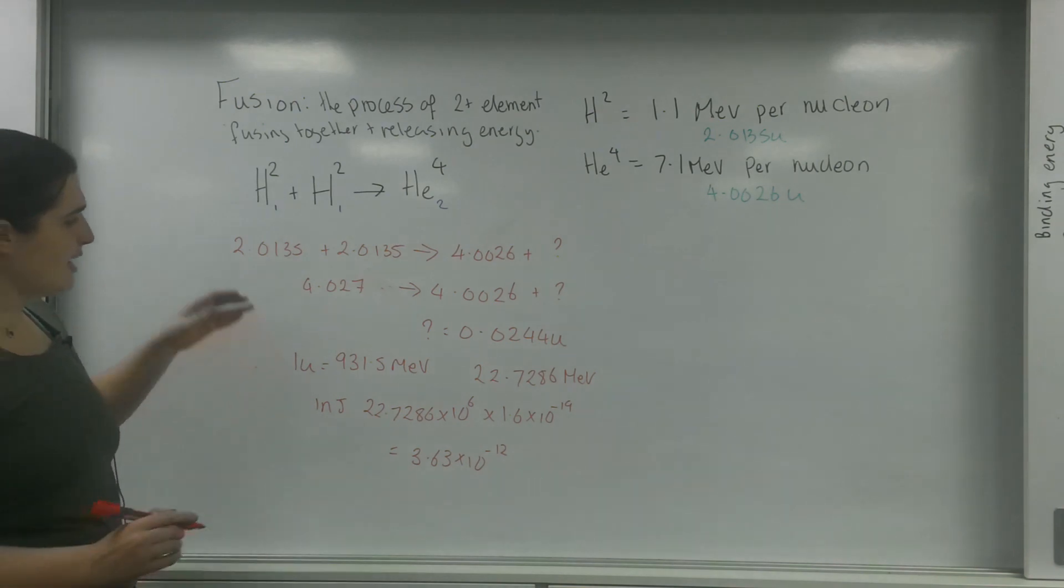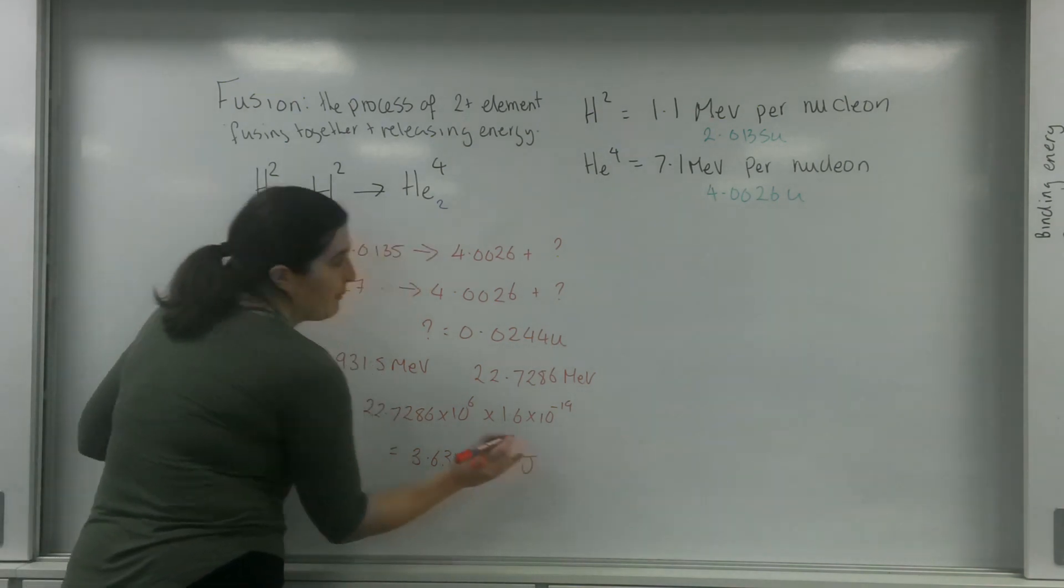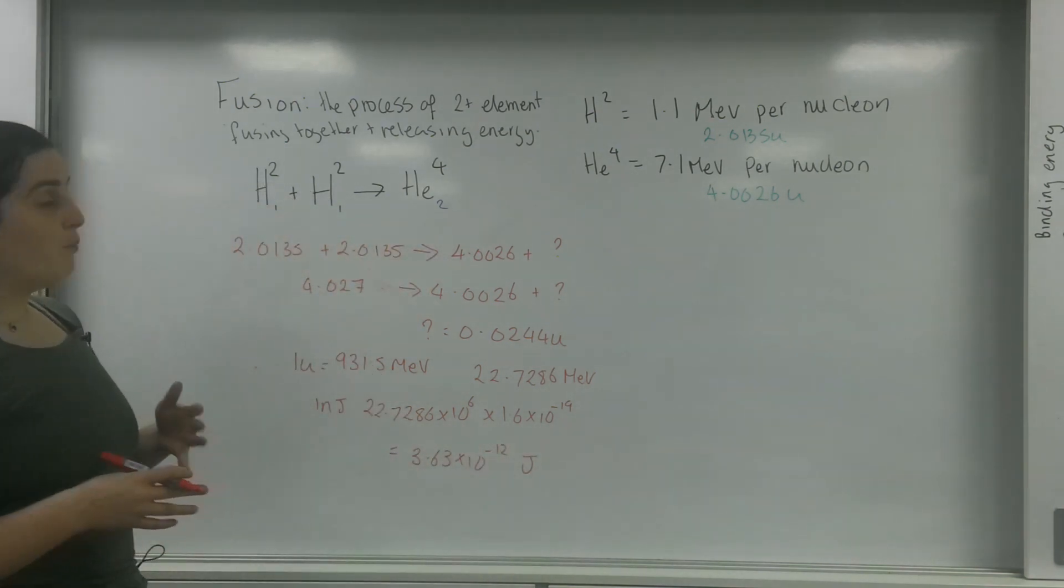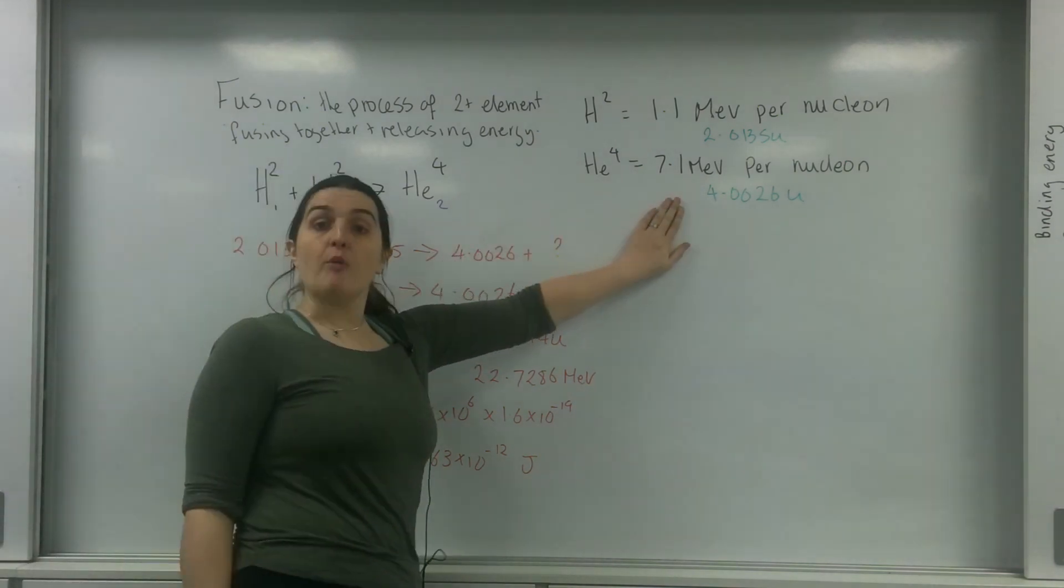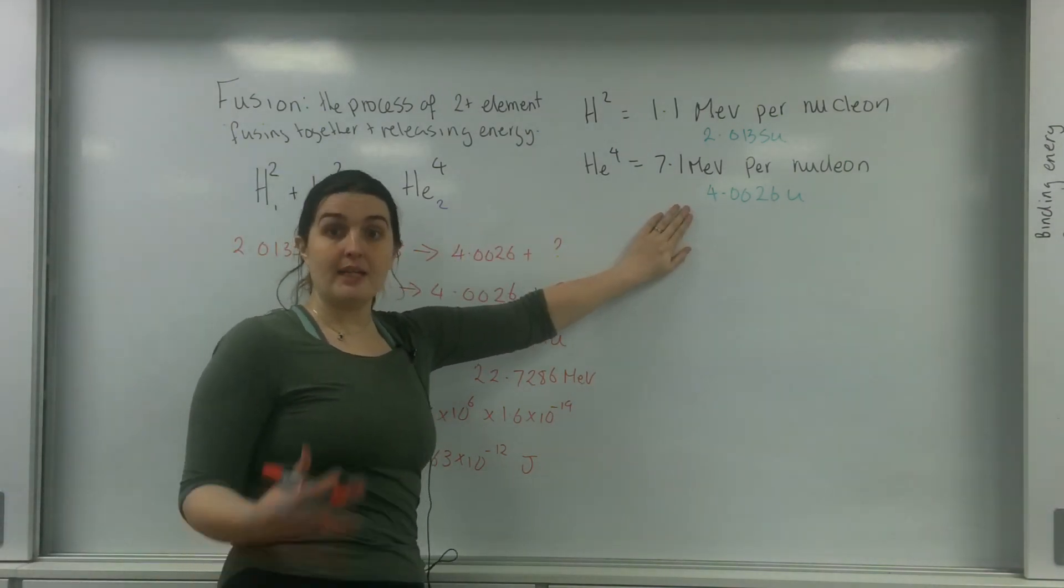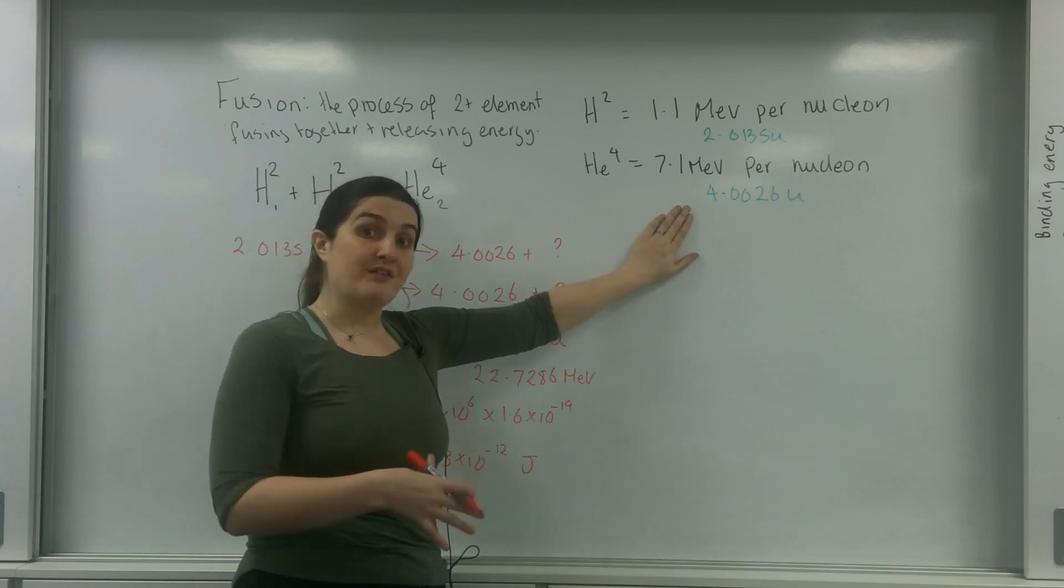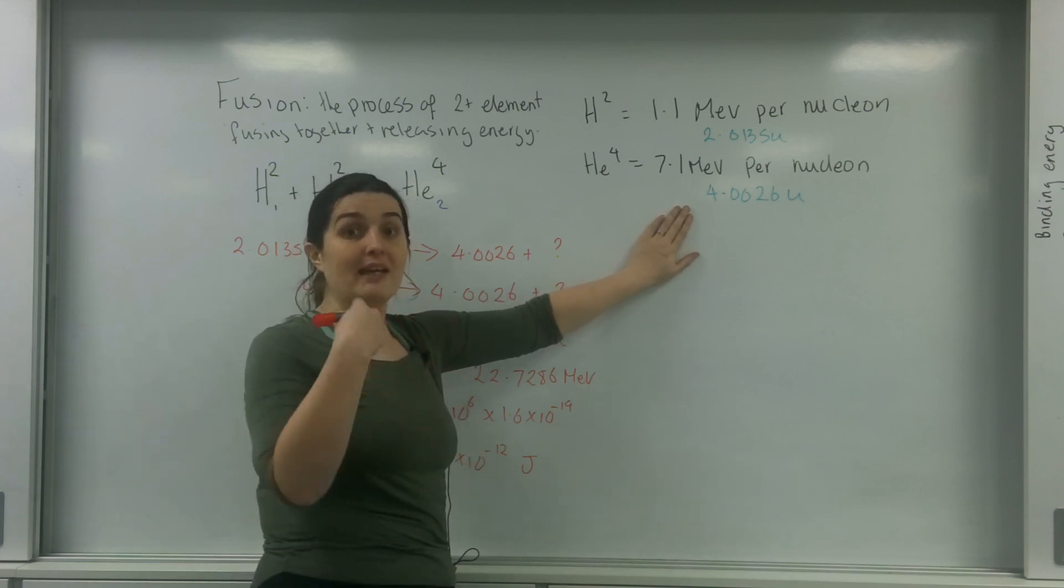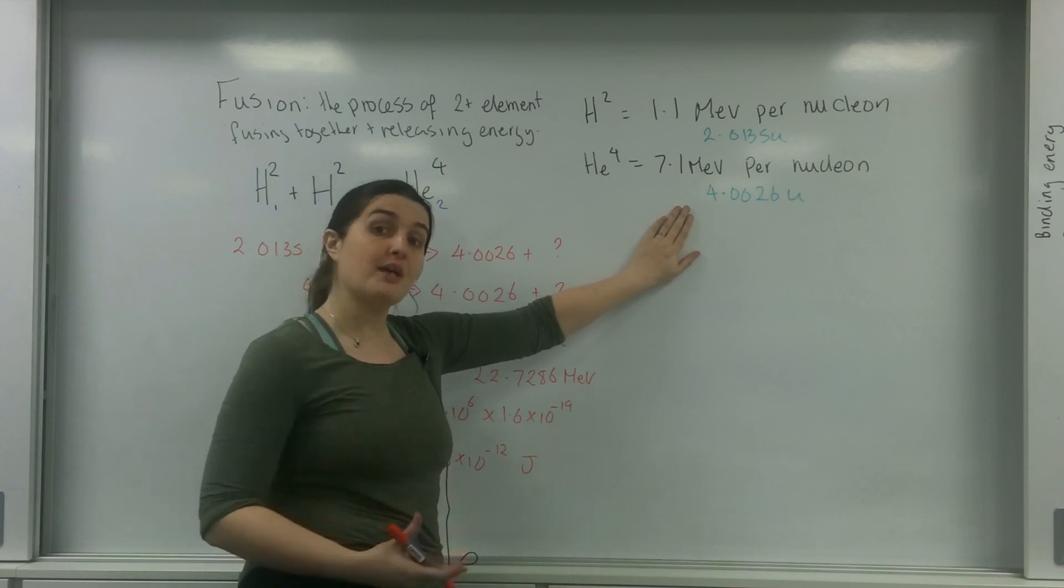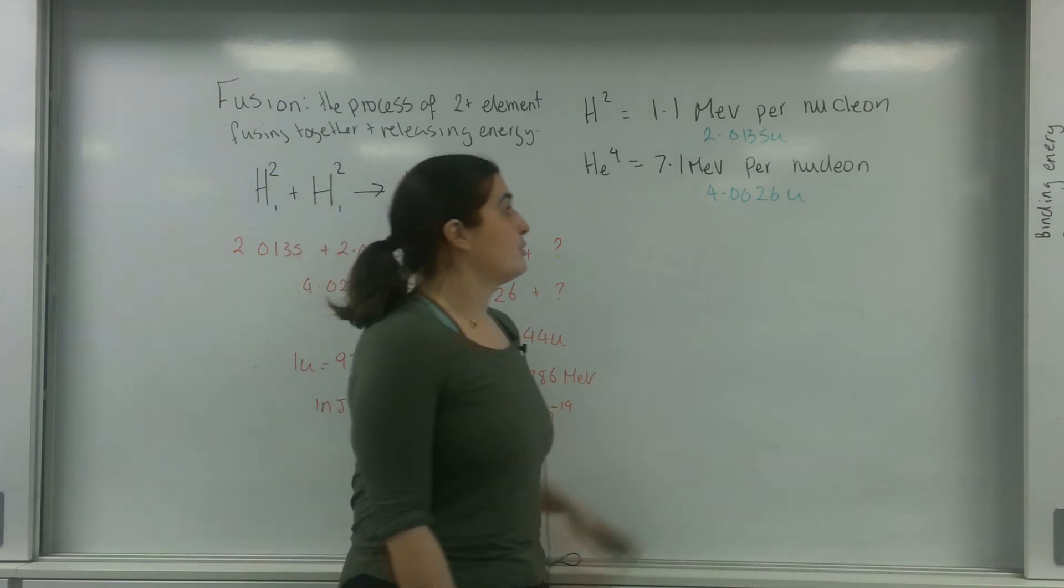I get an energy being released of 3.63 times 10 to the minus 12 joules. So that's how much energy in joules I am having being released. And what I did there is I used the information of U that I was given. So in an exam, I'm showing you both because the exam board may give you stuff in U. They may give the information in Megalectrival. So I'm just showing how you can get this information.